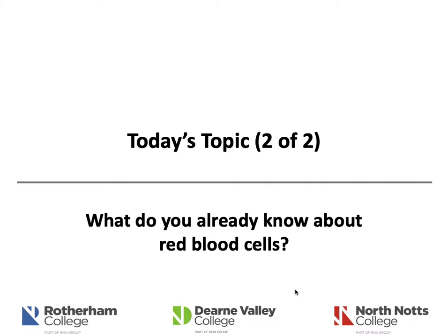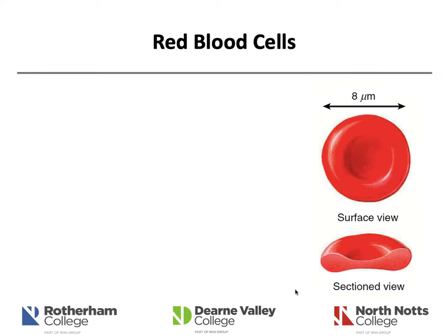That is an overview of the components of blood. The next aspect is looking at what you already know about red blood cells — take a pause and think. Red blood cells are approximately 8 micrometres in size. One micrometre is one-thousandth of a millimetre; roughly one hair follicle is approximately 20 to 140 micrometres in size, so by comparison a red blood cell is very small.